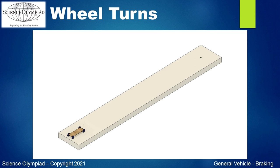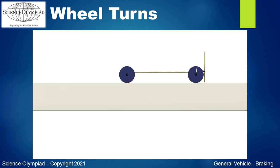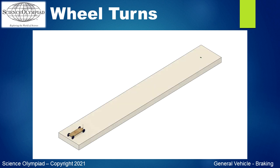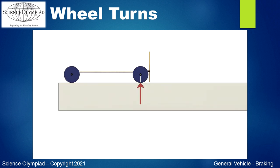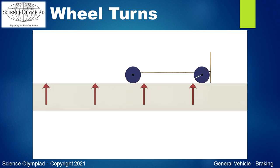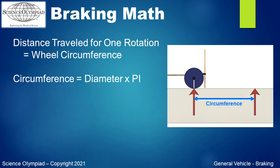Here is a typical vehicle and event track. I have put a mark on one of the front wheels. As the vehicle moves down the track, you can see the wheel rotates. You can use this rotation to determine the distance traveled. As the vehicle moves down the track, an arrow is added for each time the wheel makes a full rotation. The distance between each arrow is the circumference of the wheel.